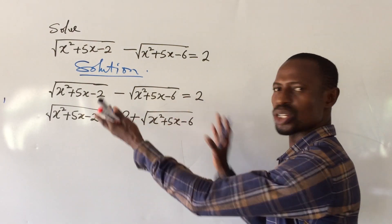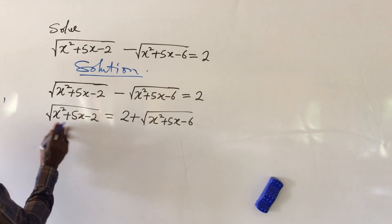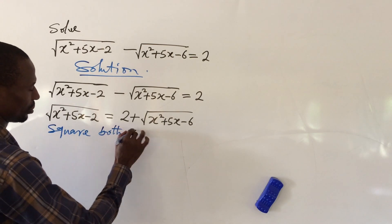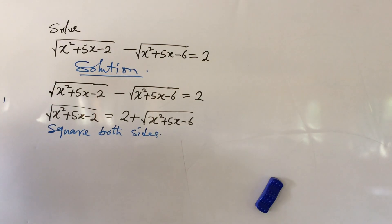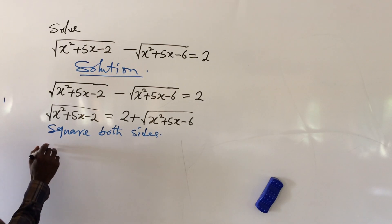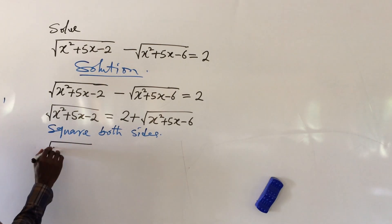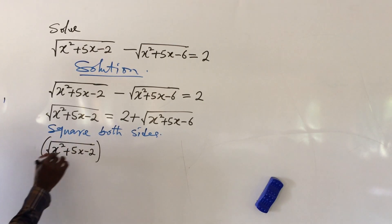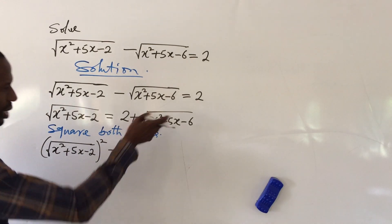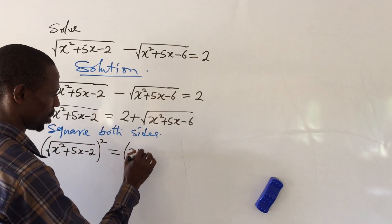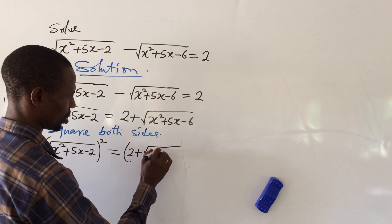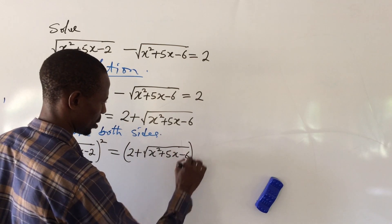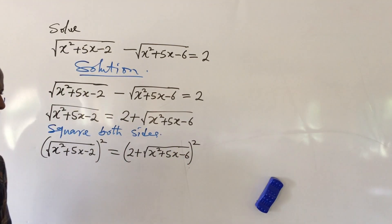Now let's square both sides. So if we square both sides of this equation, this is going to give us: the square root of x squared plus 5x minus 2, in brackets, squared, equal to 2 plus the square root of x squared plus 5x minus 6, in brackets, squared.